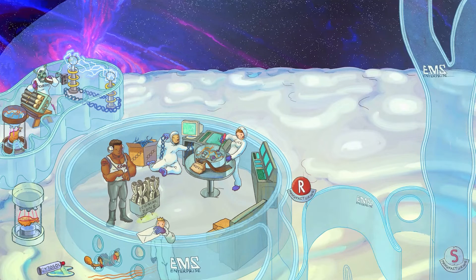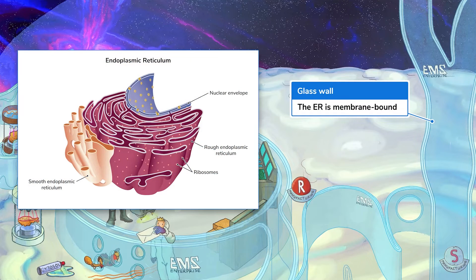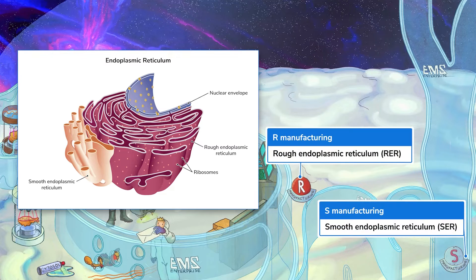The membrane of the ER is continuous with the outer membrane of the nuclear envelope. The ER is another membrane-bound organelle, represented by these double-paned glass compartments and tubes — known in space as R and S manufacturing. Why R and S? The ER comes in two flavors: rough and smooth. And why manufacturing? That's because the primary function of the endoplasmic reticulum is to produce, process, and transport cellular materials. We'll go over all these details in a bit, but first let's talk structure.